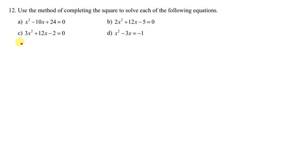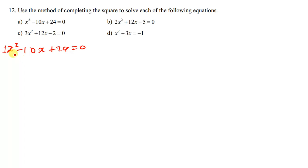The first question is x squared minus 10x plus 24 equals zero. The first thing we do is divide everything by a. Our a in this case is 1, so dividing by a gives us the same equation — there's no need to do that. The second step is to take 24 to the other side, giving x squared minus 10x equals negative 24.